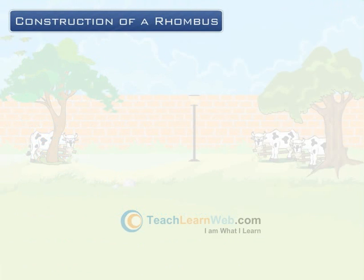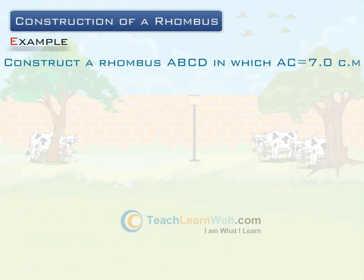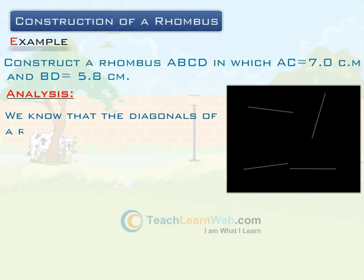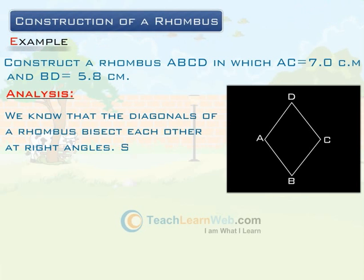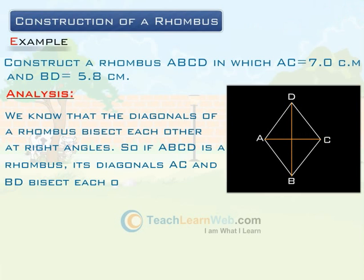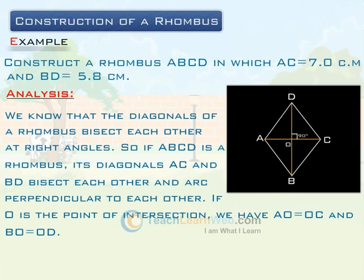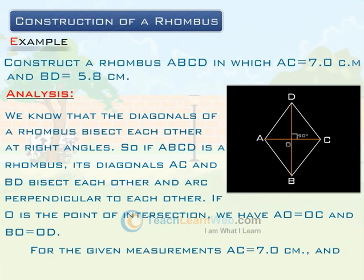Construction of a Rhombus. Example: Construct a rhombus ABCD in which AC equals 7 cm and BD equals 5.8 cm. Analysis: We know that the diagonals of a rhombus bisect each other at right angles. So, if ABCD is a rhombus, its diagonals AC and BD bisect each other and are perpendicular to each other. If O is the point of intersection, we have AO equals OC and BO equals OD. For the given measurements, AC equals 7.0 cm and BD equals 5.8 cm.